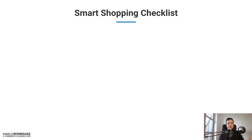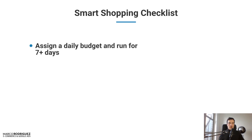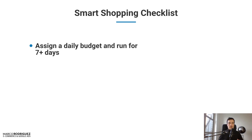If you want to create a smart shopping ad, here's a quick checklist. First: assign a daily budget and run it for seven or more days. Smart shopping doesn't work if you constantly change bidding strategies or the daily budget — these ads have to recalibrate and are super sensitive. Assign a budget you can commit to spending for at least seven, maybe even 14 days. For example, 20 or 30 bucks a day. Starting at $100 makes you too nervous to leave it running; at $20-$30 you give Google time to find the right placements, time of day, and users.